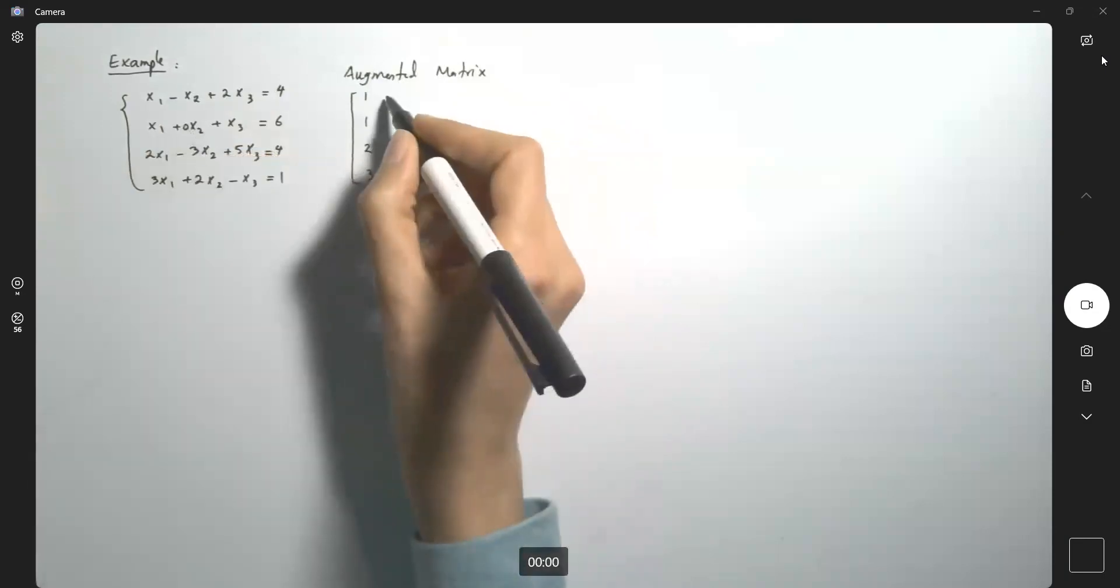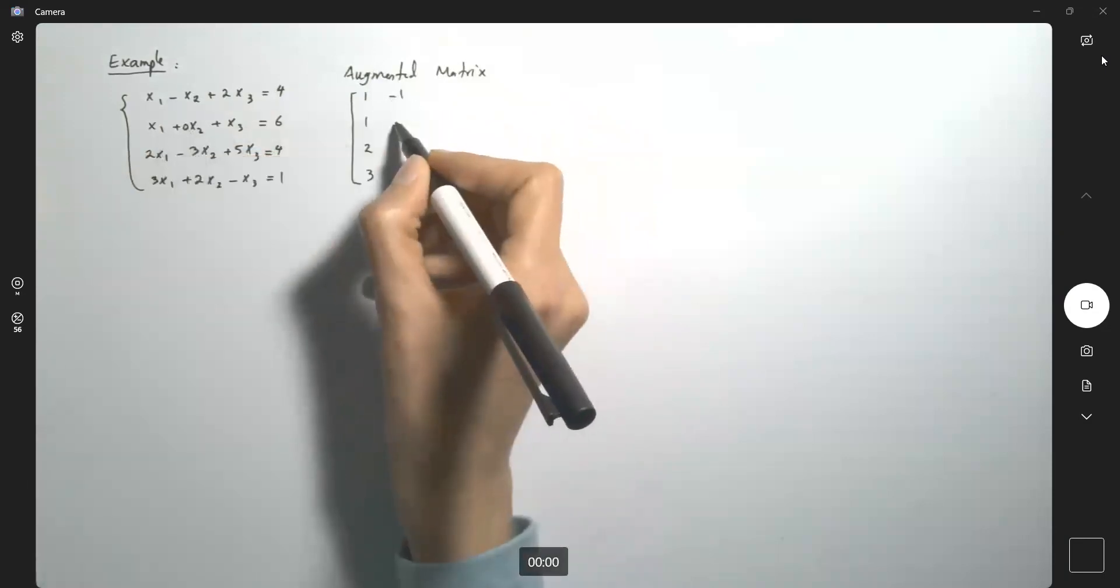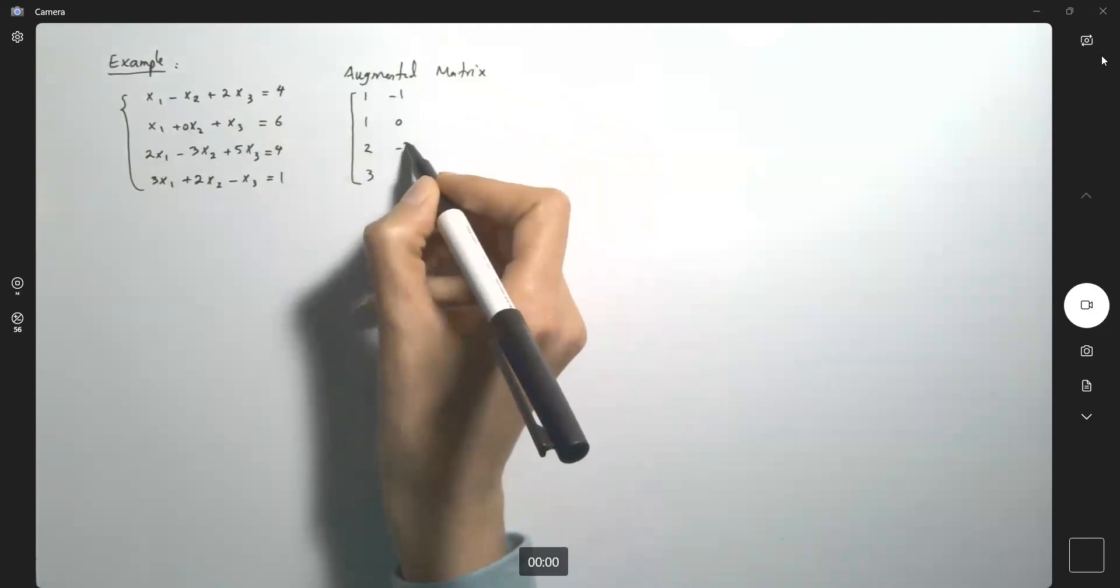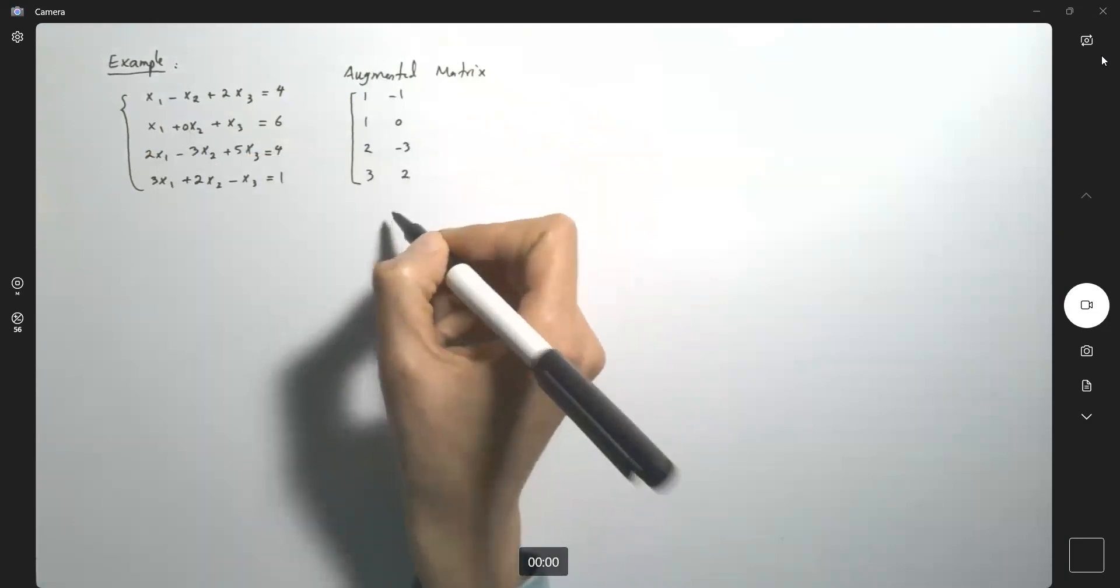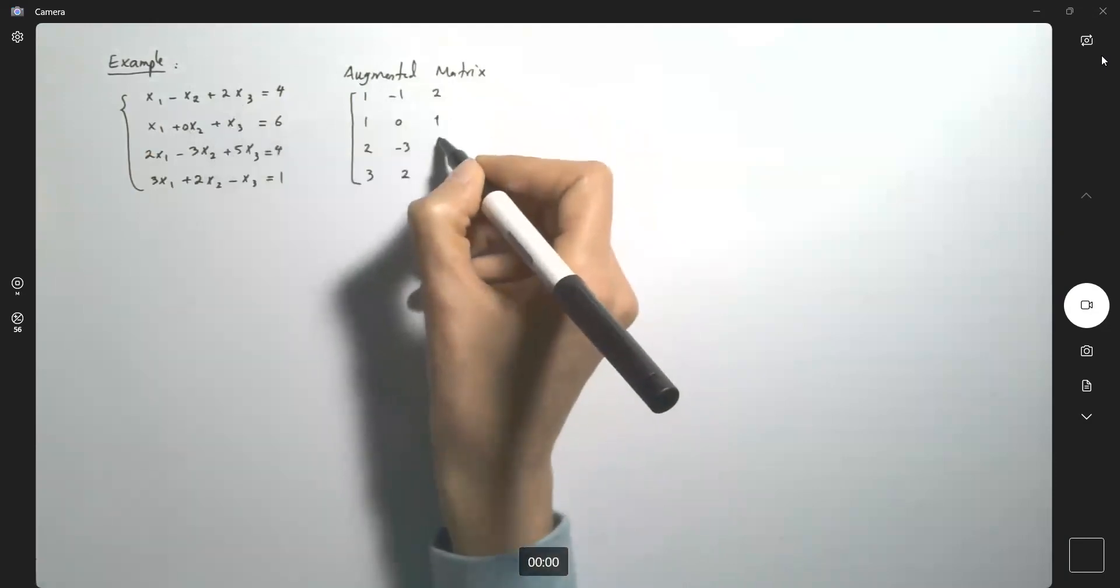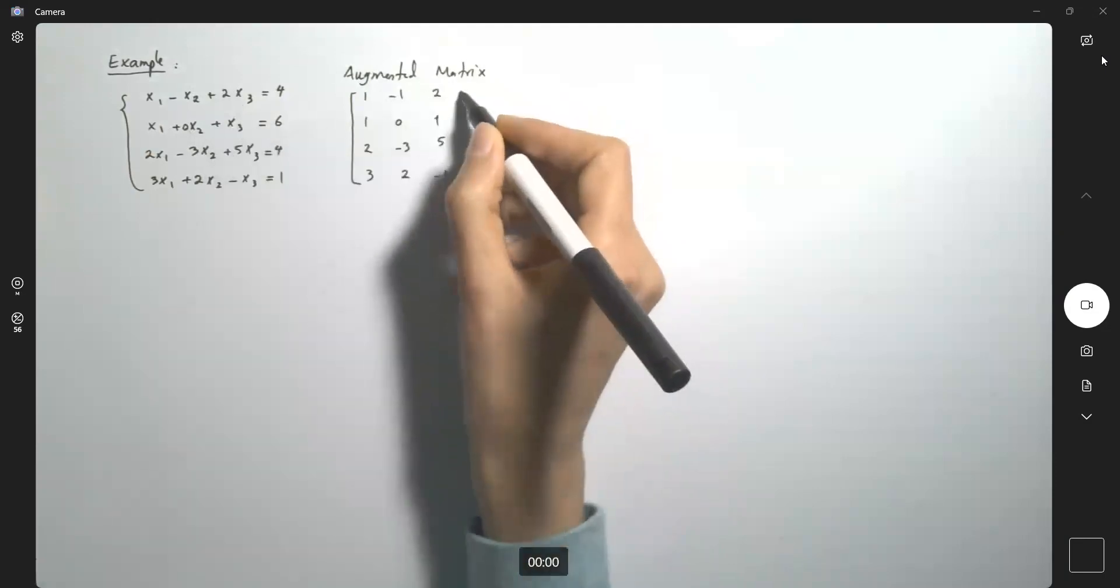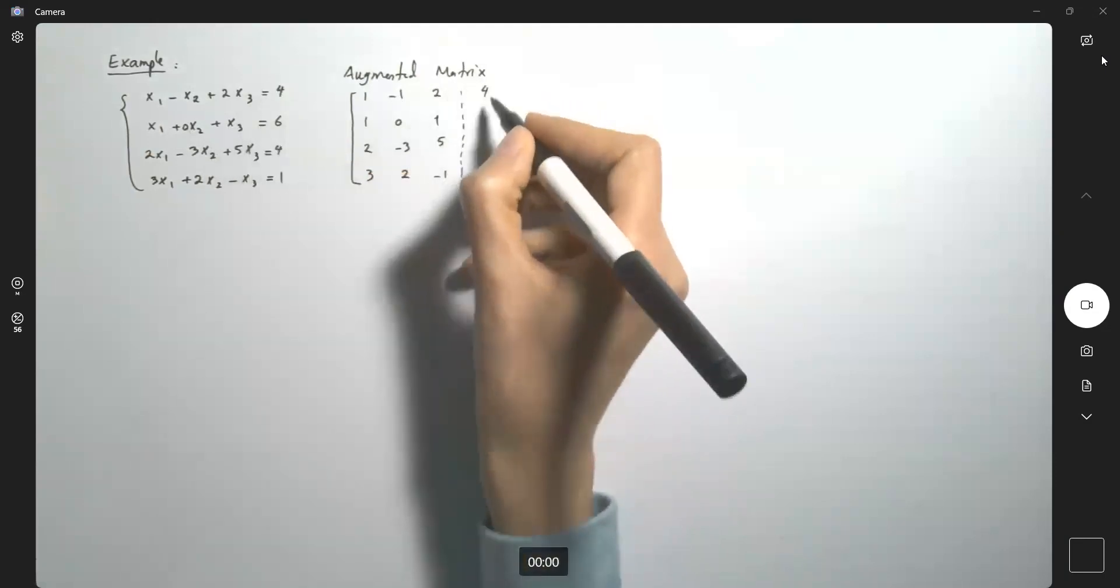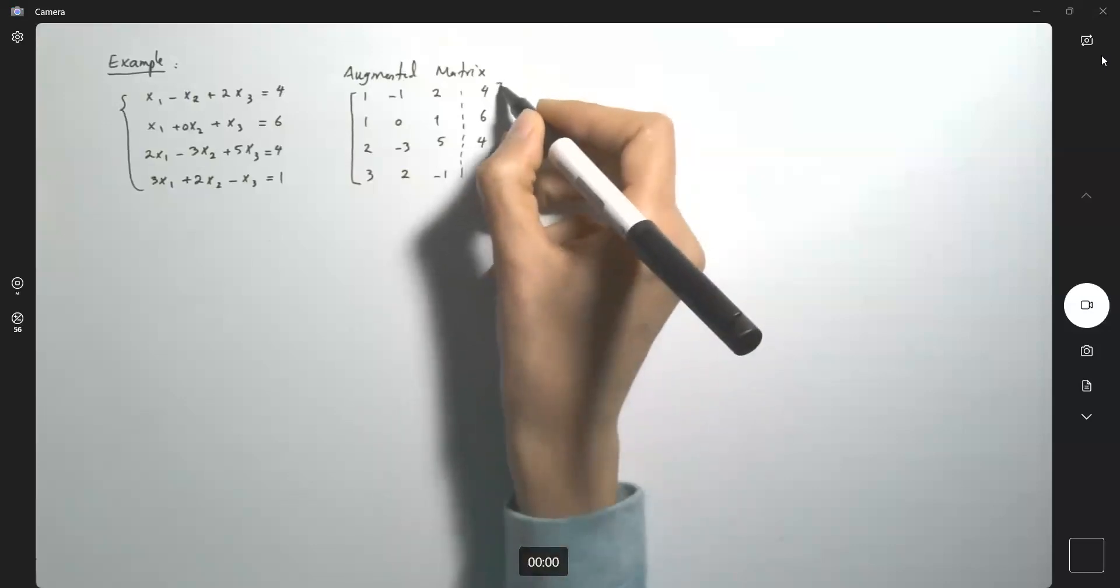The second column, coefficients of x2. So since you don't have x2, it means that it was zero x2. So you have negative one, and then zero, then negative three, then two. The third column are the coefficients of x3, which are two, one, five, and negative one. And eventually, we have the constants four, six, four, and one.